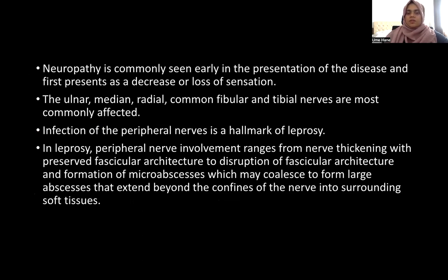Affliction of the peripheral nerve is a hallmark form of leprosy. Peripheral nerve involvement ranges from nerve thickening with preserved fascicular architecture, to a disruption of the fascicular architecture and formation of micro-abscesses, which may coalesce to form a single large abscess that extends beyond the confines of the nerve into the surrounding tissues. As in our case, there was enlargement as well as loss of the fascicular architecture and formation of micro-abscesses.